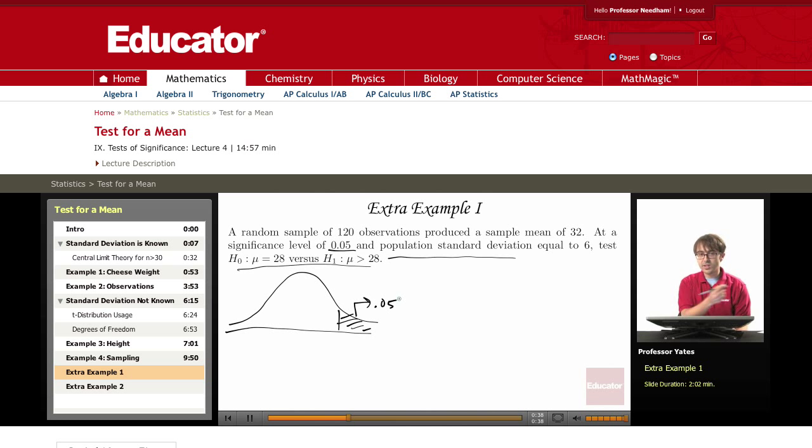So let's try and figure out all the information that they're giving us here. n equals 120. My sample mean is 32. And my population standard deviation, sigma is 6.